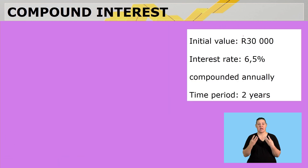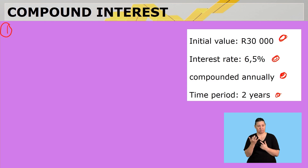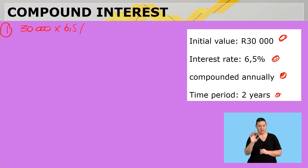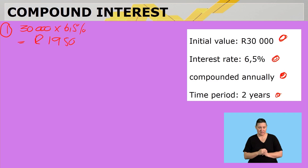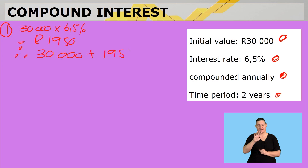So, what do we have? We have our initial value, our interest rate, compounded annually, and a time period of two years. In year one, we calculate her interest: 30,000 times 6.5% equals 1,950. Remember, if this were simple interest, that amount would have stayed the same. But because it's compounded, we add the interest to get the new amount: 30,000 plus 1,950 equals 31,950.